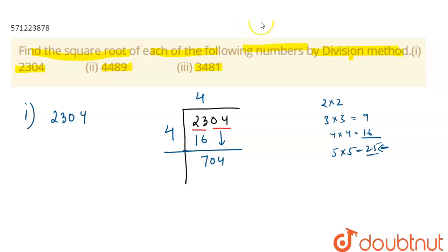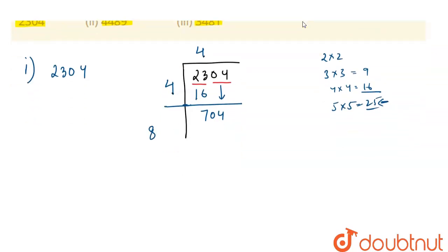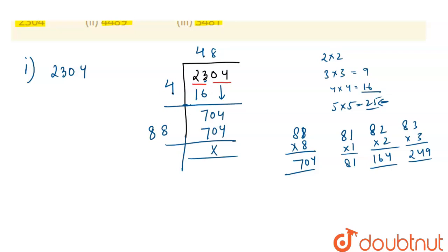Now we will add these two 4s. We will get 8. Now we will make such pairs with 8, like 81, 82, 83. So it is 81 and here we have 164 and here we have 249. We need to check these type of numbers similar to or less than 704. If we multiply 88, we will get 704. So here 88 into it, we will get 704. So the square root of 2304 is 48.